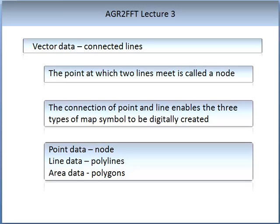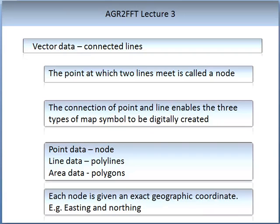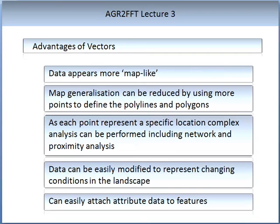Vector data is characterised by a series of connected lines. The point at which two lines meet is called the node. The connection of point and line enables three types of symbols to be digitally created: point data (node), line data (polylines), and area data (polygons). Area data can also be thought of as spatial data. Each node is given an exact geographical coordinate — for example, an easting and a northing. There are several advantages of using vectors: the data appears more map-like; map generalisation can be reduced by using more points to define polylines and polygons; complex analysis can be performed including network and proximity analysis.